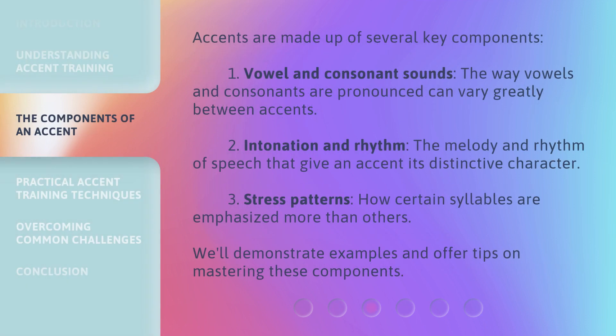Accents are made up of several key components. First, vowel and consonant sounds — the way vowels and consonants are pronounced can vary greatly between accents. Second, intonation and rhythm — the melody and rhythm of speech that give an accent its distinctive character. Third, stress patterns — how certain syllables are emphasized more than others. We'll demonstrate examples and offer tips on mastering these components.